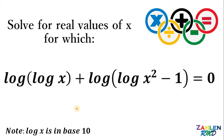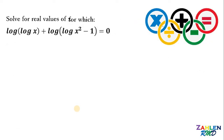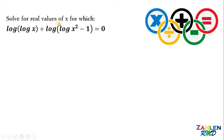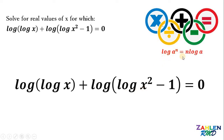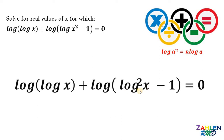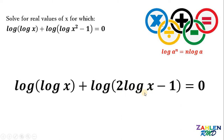Let's answer this question together. Our question is: solve for the real values of x for which logarithm of logarithm of x plus logarithm of logarithm of x squared minus 1 equals 0. First, simplify logarithm of x squared. Using the power rule, logarithm of a raised to n equals n times logarithm of a. Therefore, logarithm of x squared can be written as 2 times logarithm of x.